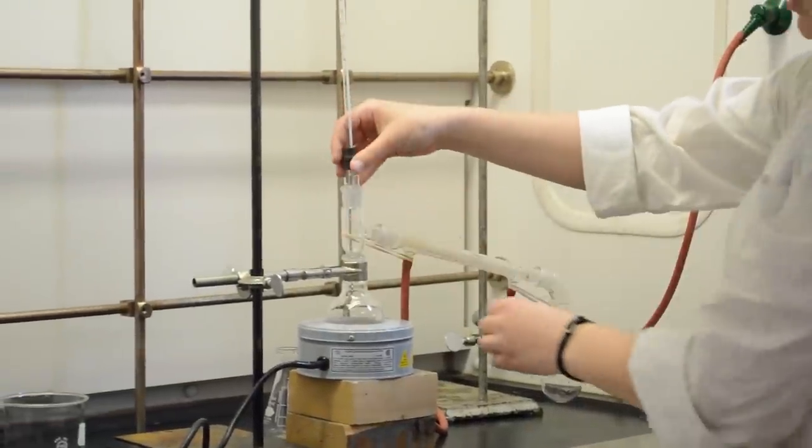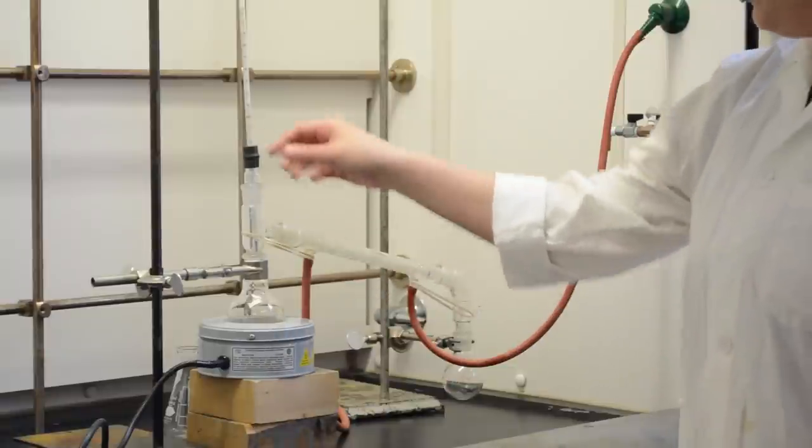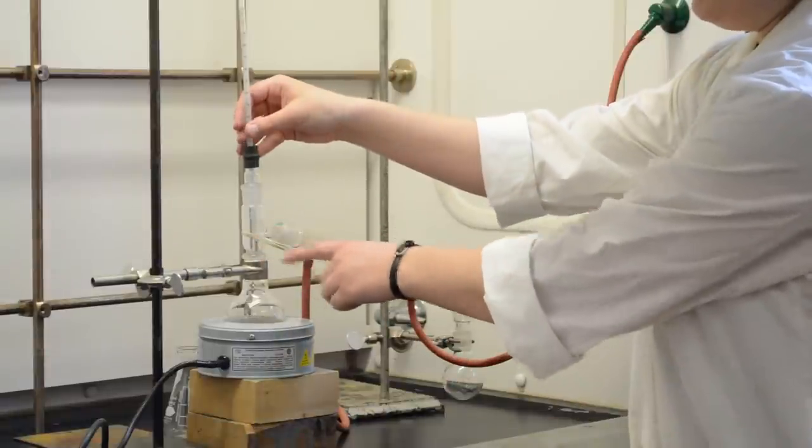The thermometer is placed on top of the condenser adapter. Make sure that the mercury bulb is sitting just below the joint in the distilling head.